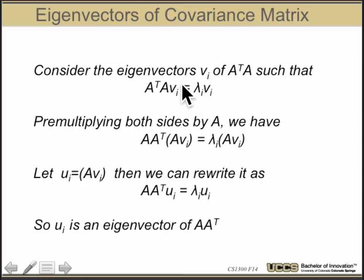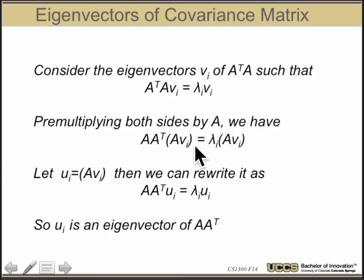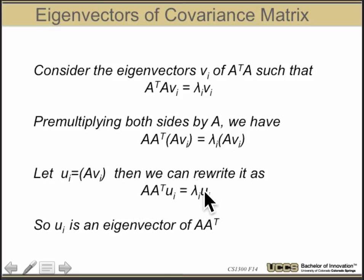To see how: starting with the standard eigenvector equation for A transpose A — A transpose A times vi equals lambda vi — this is just BX equals lambda X, the standard eigenvalue equation. But if I pre-multiply both sides by A, on the left-hand side I get AA transpose times A vi, and on the right-hand side I get A times lambda vi, which is lambda times A vi. Doing a change of variables — letting ui equal A vi — this equation now looks like AA transpose ui equals lambda i times ui. This is also an eigenvalue equation, so ui is an eigenvector of AA transpose. That means I can compute vi by doing the eigenvectors of the smaller A transpose A equation, then multiply by A to expand their dimensions and get ui.